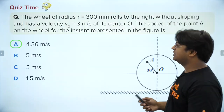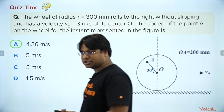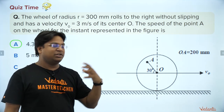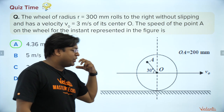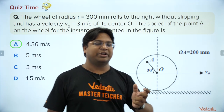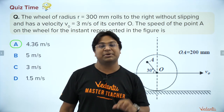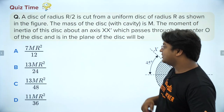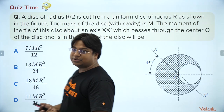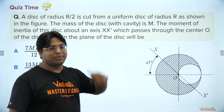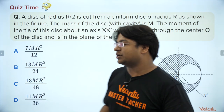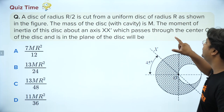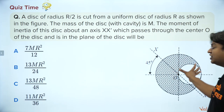This question illustrates how for any translating and rotating object you can superimpose the rotational and translational velocities at any point to find the net velocity. Now let's move to the next question on moment of inertia. A disk of radius R/2 is cut from a uniform disk of radius R — there was a larger disk and a smaller disk has been removed.